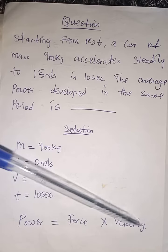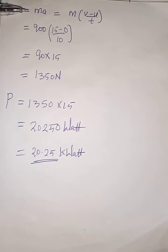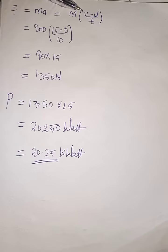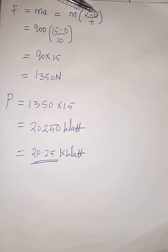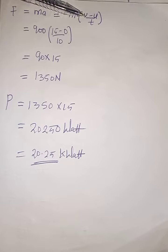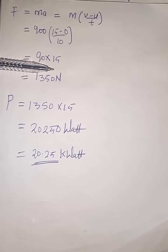Applying this formula: force equals mass times acceleration, from Newton's second law of motion. Acceleration is change in velocity over time, which is final velocity minus initial velocity divided by time. Substituting the values: F = 900 × (15 − 0) / 10, giving us 1350 newtons for the force.